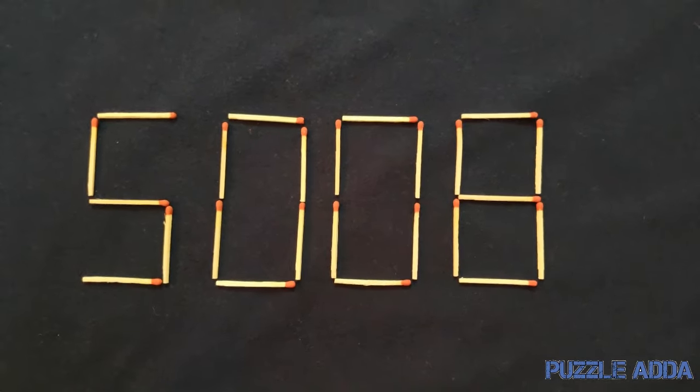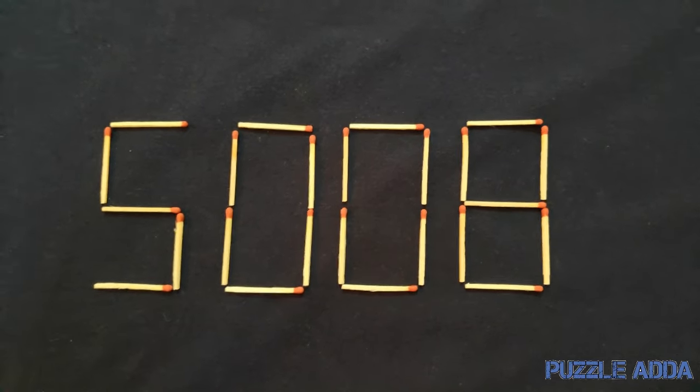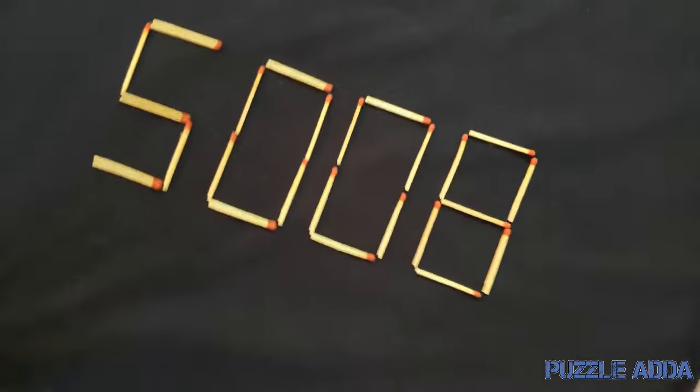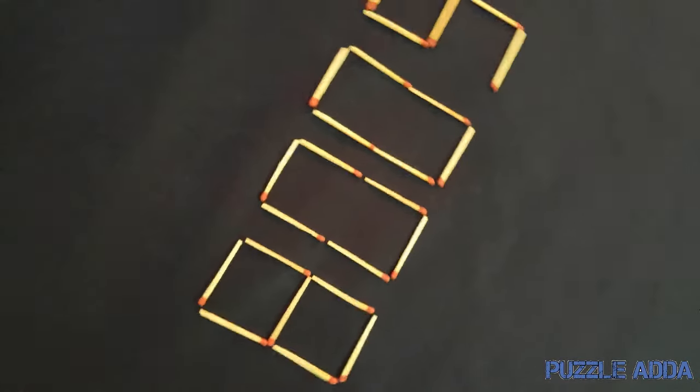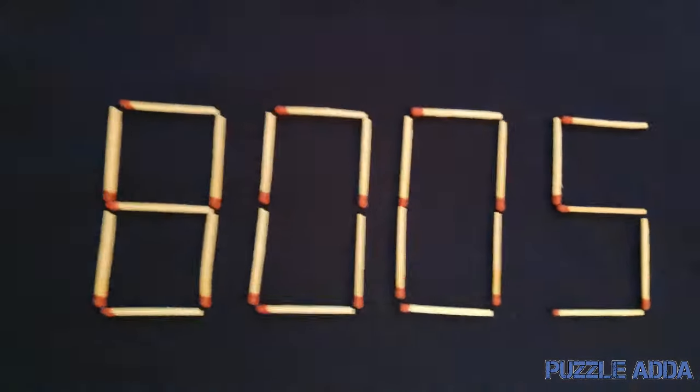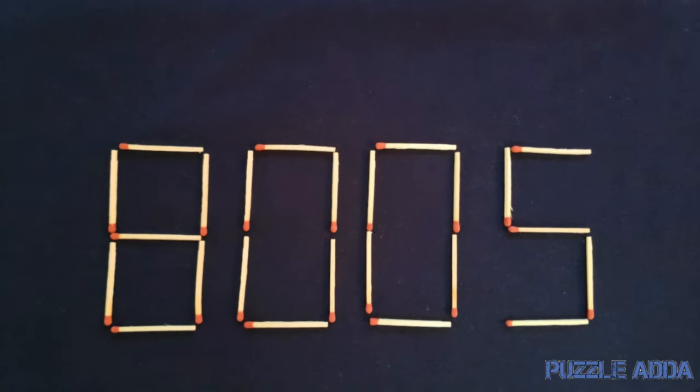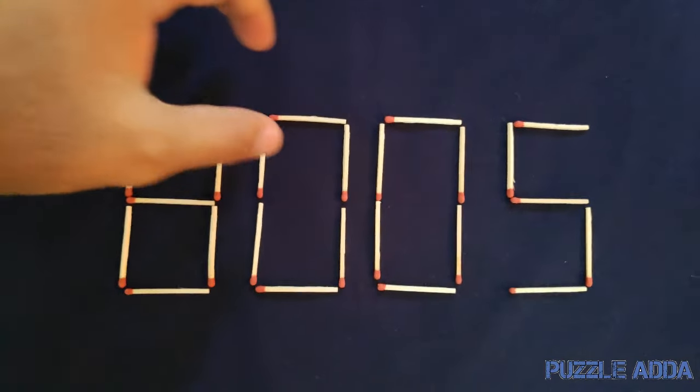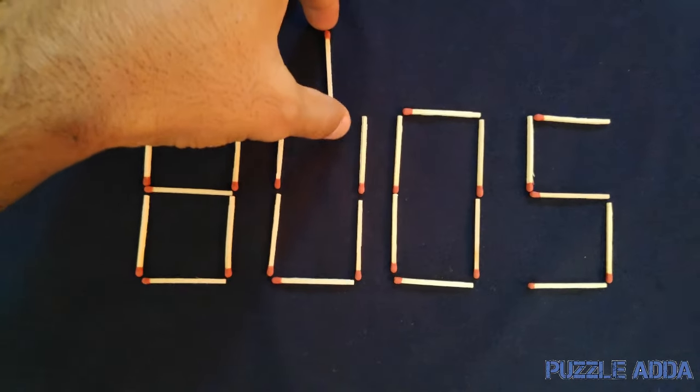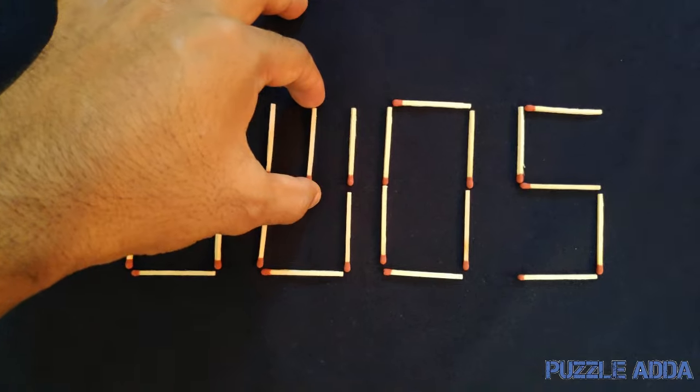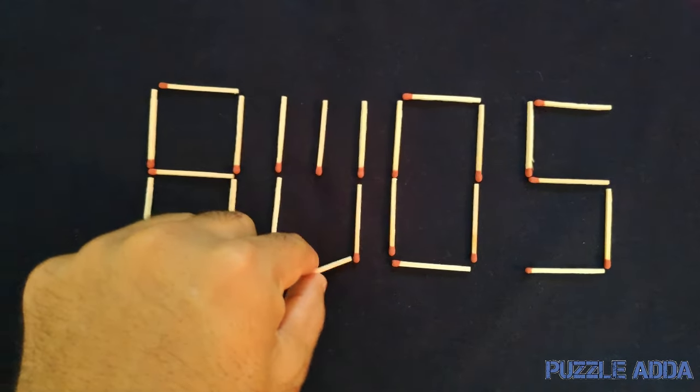first you have to look at the picture upside down which will say like 80005 and then you have to move the matchstick over this 0 and you have to put that matchstick here and after that you have to